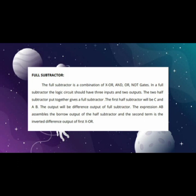The first half subtractor will be C and AB. The output will be difference output of full subtractor. The expression AB assembles the borrow output of the half subtractor and the second term is the inverted difference output of first XOR.